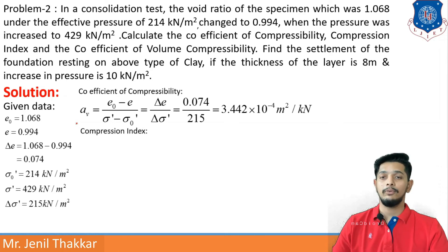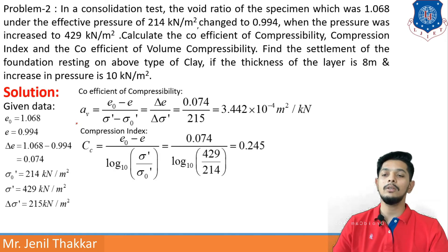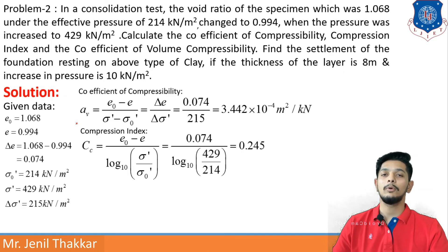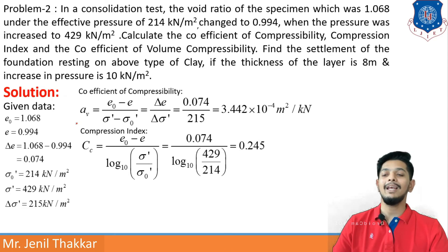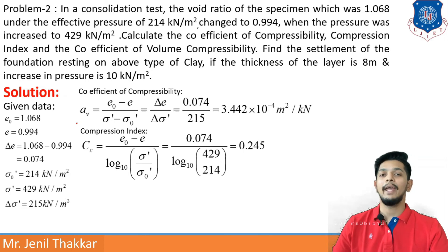The second item asked is the compression index Cc. The formula is Cc = (E0 − E) / log₁₀(σ' / σ0'). With the values of E0, E, σ', and σ0' known, putting all values in gives Cc = 0.245.